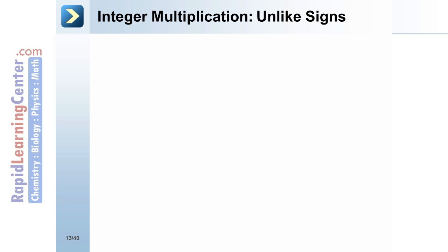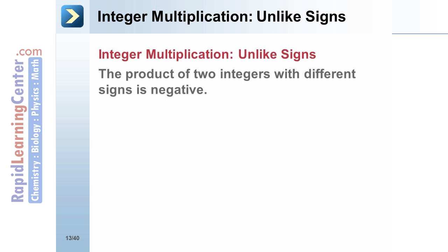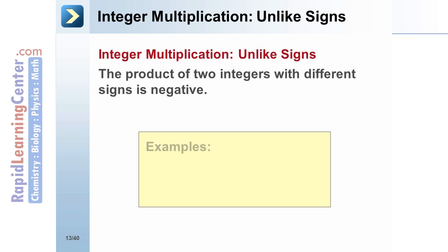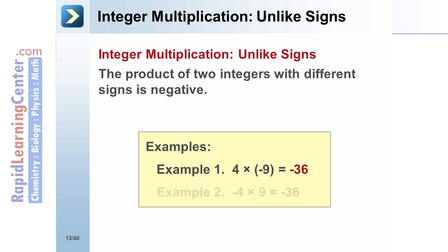Integer Multiplication — Unlike Signs: The product of two integers with different signs is negative. Example 1: 4 times negative 9 equals negative 36. Example 2: Negative 4 times 9 equals negative 36.